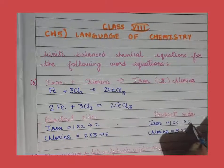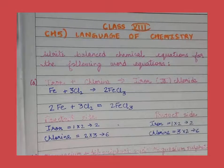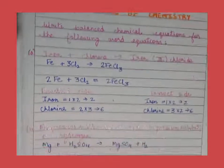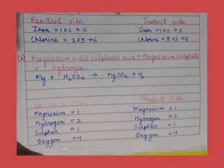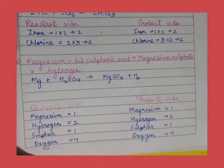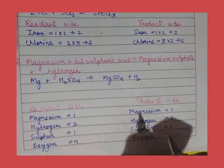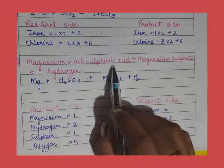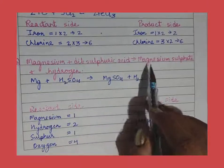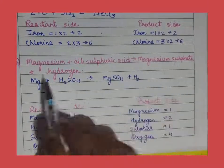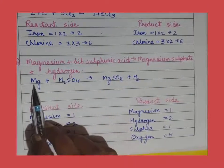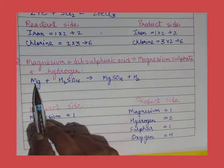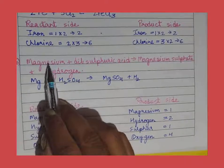Now let us come to the next example. Magnesium reacts with dilute sulfuric acid to give magnesium sulfate and hydrogen. What will be the chemical equation?